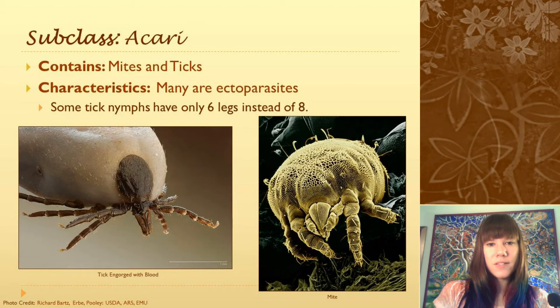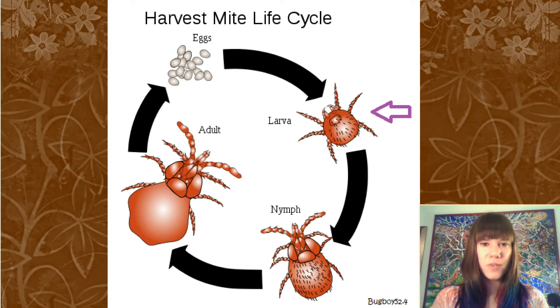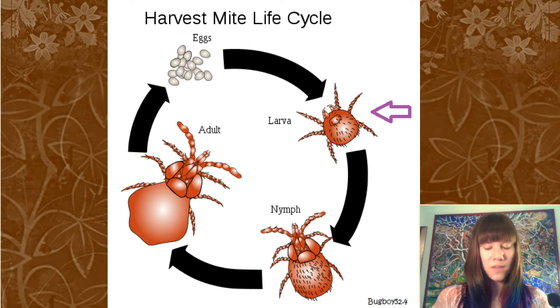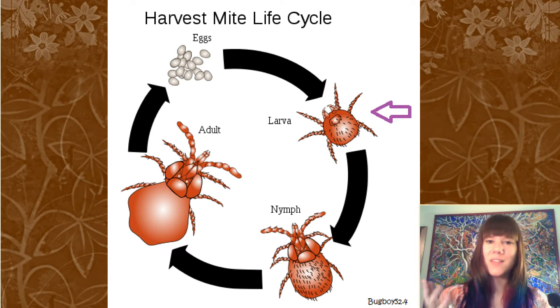Some mites and ticks are tricky because in their nymphal stages they'll only have six legs, so you might pick one up and think it's an insect. But check for three body segments — if there aren't three body segments, it's definitely not an insect.